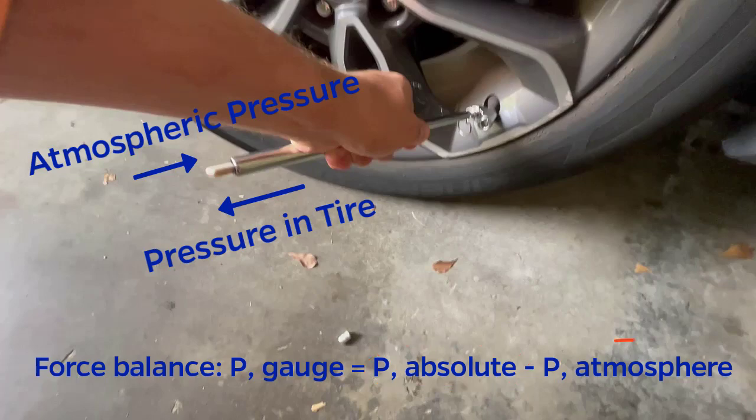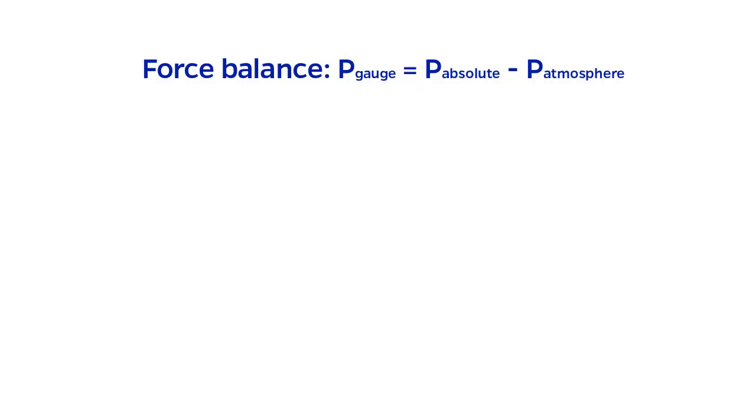By rearranging this equation, we get absolute pressure equals gauge pressure plus atmospheric pressure.